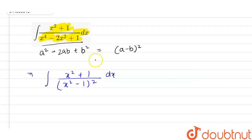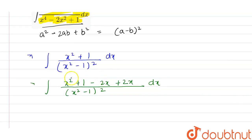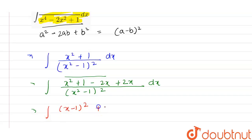Now in the numerator we add and subtract 2x. So this becomes integration of (x² + 1 - 2x + 2x) / (x² - 1)² dx. We can see the numerator contains (x² - 2x + 1), which is the same as (x - 1)². So this is equal to integration of [(x - 1)² + 2x] / (x² - 1)² dx.